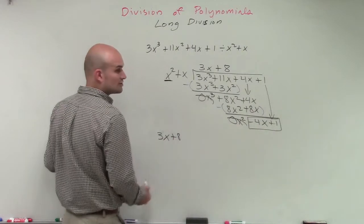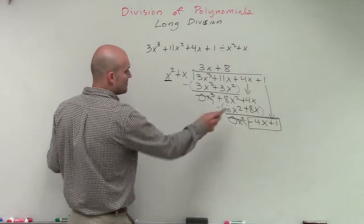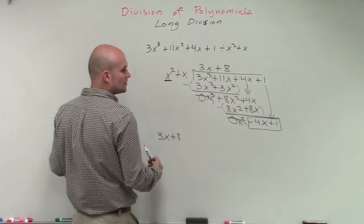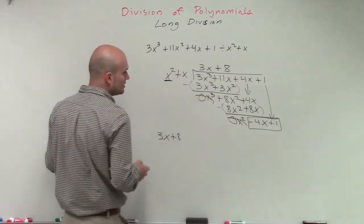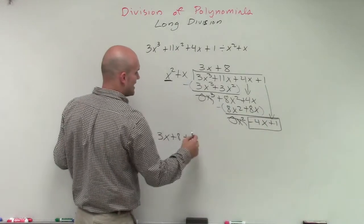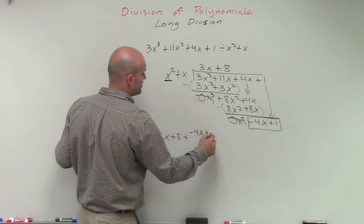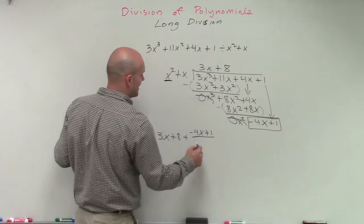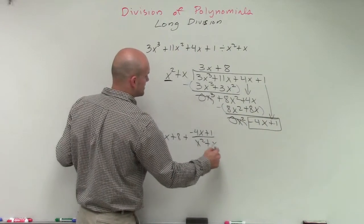3x plus 8 is going to be the quotient, and then plus your remainder over your divisor. Well, since our remainder, I'll just write it as this. So plus a negative 4x plus 1 divided by x squared plus x.